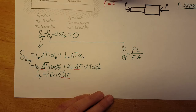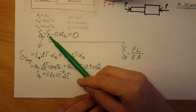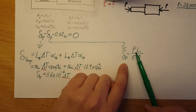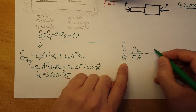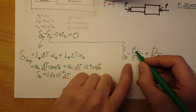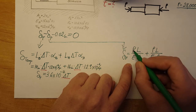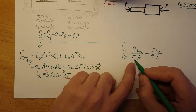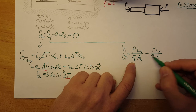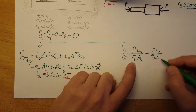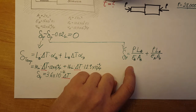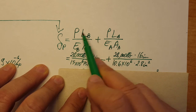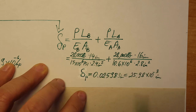For the deformation due to force, we use the axial deformation formula applied twice — once for bronze and once for aluminum. The force P is the same for both, but the lengths, elastic moduli E, and areas A differ: δ = PL / (EA). Plugging in all known values for both materials gives us a numerical result.